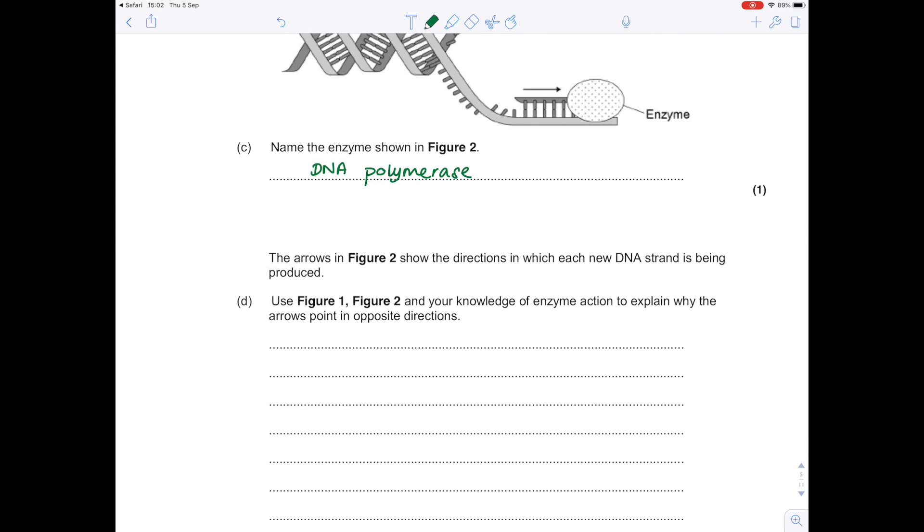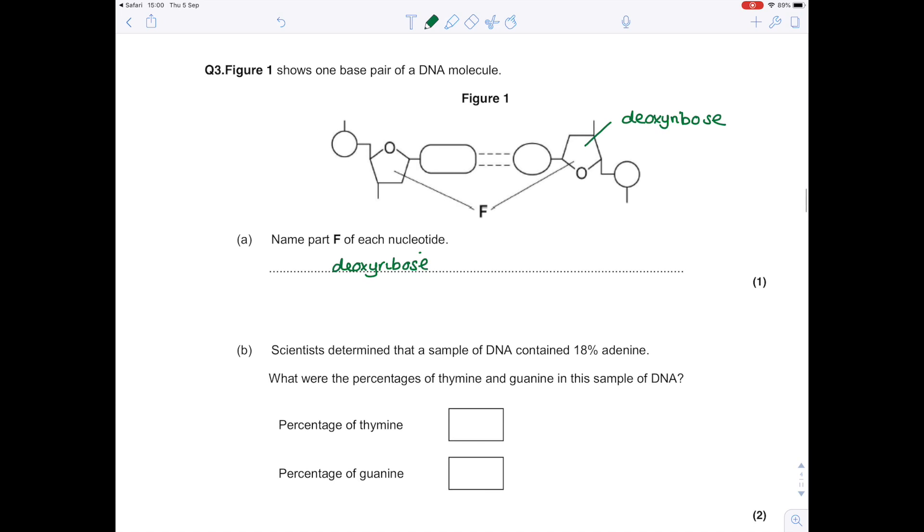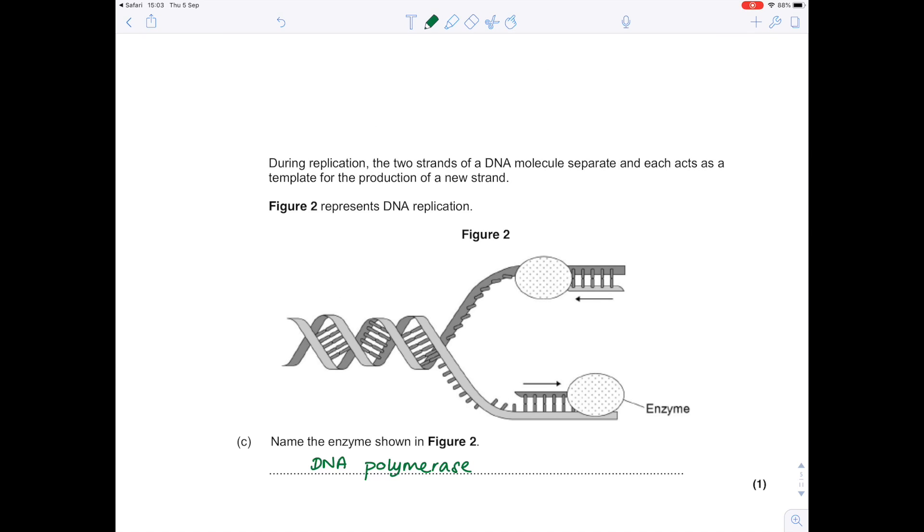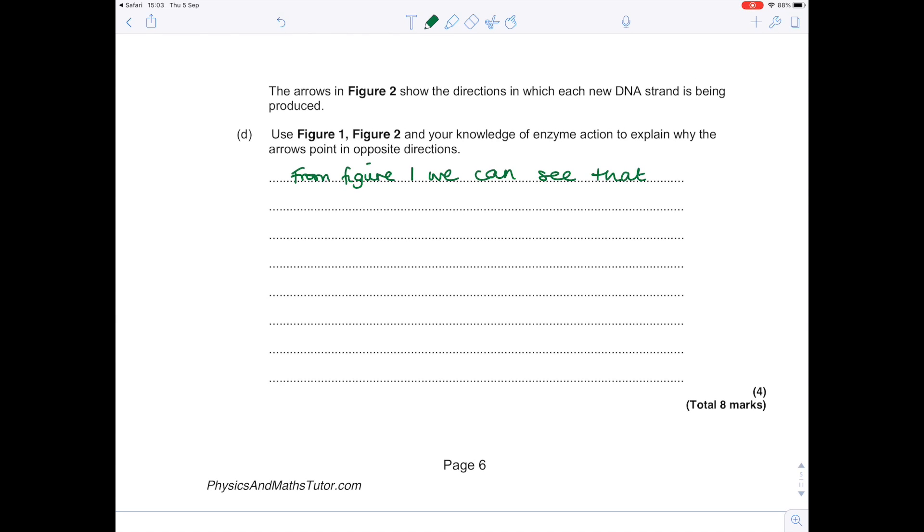The arrows in Figure 2 show the directions in which each DNA strand is being produced. Use Figure 1 and Figure 2 and your knowledge of enzyme action to explain why the arrows point in opposite directions. We can see from Figure 1 that the DNA is running as two parallel strands running against each other, so we say that they are anti-parallel. We can also see from Figure 1 that the nucleotides are aligned in a different order. Because DNA polymerase being an enzyme has a very specific active site which binds to its substrate, they can only bind in a very specific way. From Figure 1, we can see that DNA has anti-parallel strands, so strands that run in the opposite direction to each other, and we can also see that the shape of the nucleotides is different.